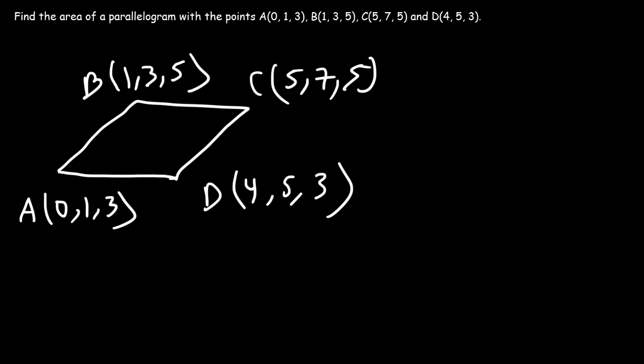So how can we use these points to find the two vectors that we need, vectors u and v? Vector u, let's define it as starting from point A going to point B. So we can say that u is the same as vector AB.